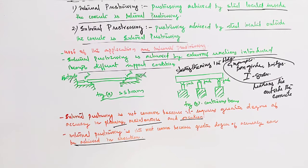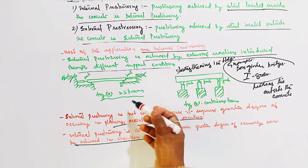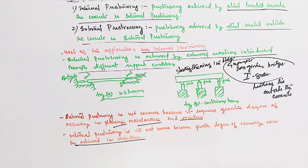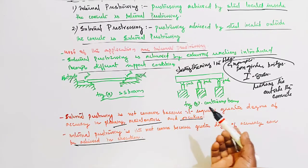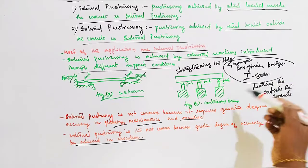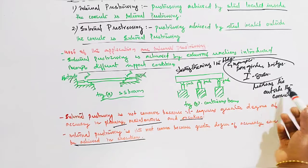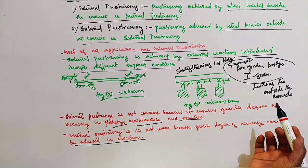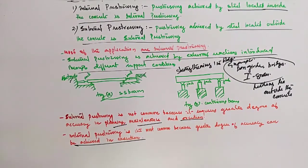Internal pre-stressing is common. External pre-stressing is achieved by external reactions introduced through different support conditions - simply supported and continuous beam cases. External jacking will be pre-stressed because the steel, called the tendon, is located outside the concrete. This is mainly adopted in bridges: box girder bridge, I-girder bridge. Also used for strengthening buildings.